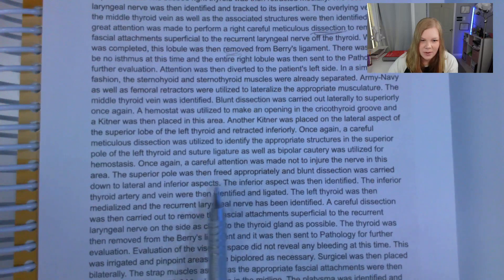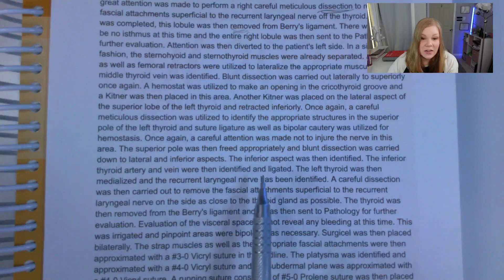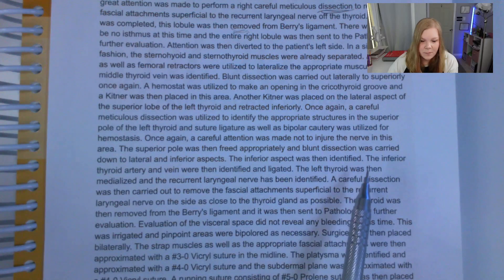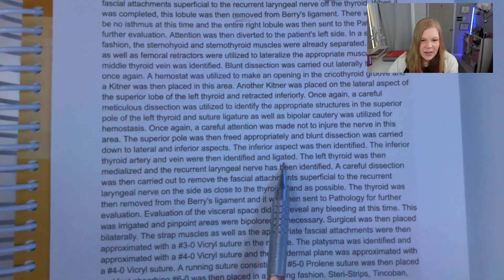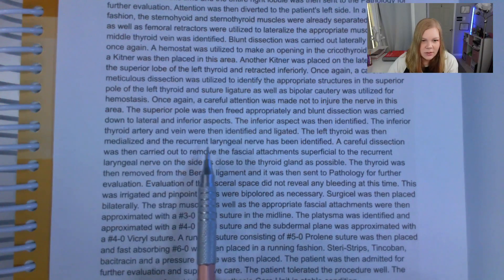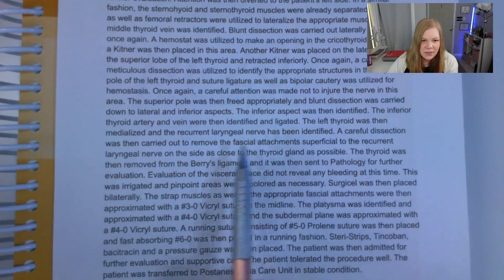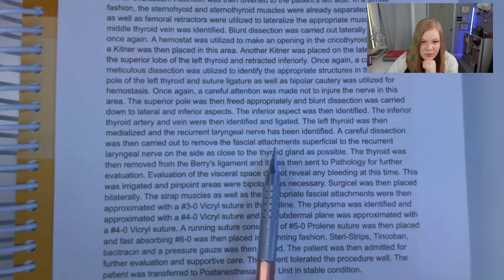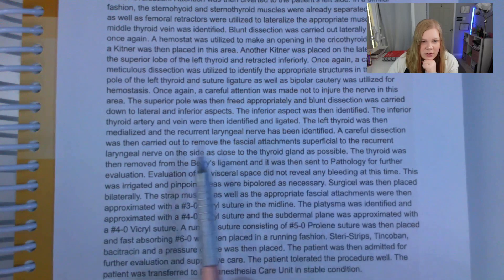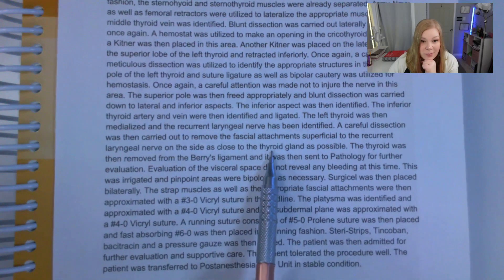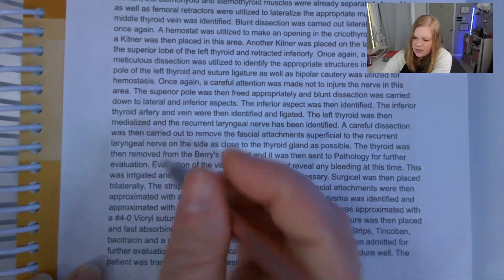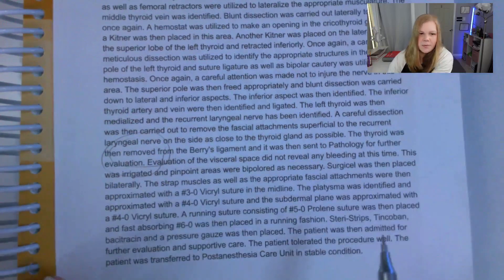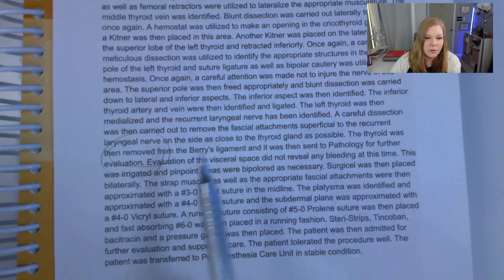The superior pole was then freed. Blunt dissection was carried down to the lateral and inferior aspects. The inferior thyroid artery and vein were identified and ligated. The left thyroid was then medialized. The recurrent laryngeal nerve was identified, and careful dissection was carried out to remove the fascial attachments superficial to the recurrent laryngeal nerve, as close to the thyroid as possible. The left thyroid was then removed from Berry's ligament and sent to pathology for further evaluation.